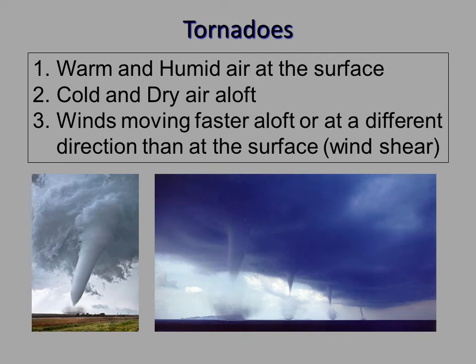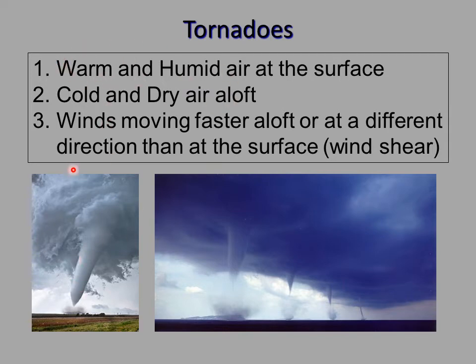Tornadoes. Here are the conditions necessary to form a tornado. You need warm and humid air at the surface, cold and dry air aloft, and winds moving faster aloft in a different direction than at the surface — that's called wind shear. Humid air is actually very light because water vapor is oxygen and two hydrogens, much lighter than nitrogen or oxygen molecules. So warm fluffy air down here wants to rise into the cold dry air aloft, and they want to switch places — that warm moist air gets shot up, and that's where you get your tornadoes.